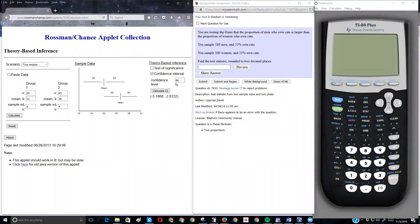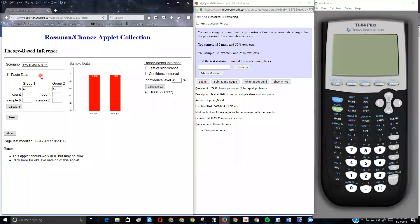We want to test the claim that the proportion of men who own cats is larger than the proportion of women who own cats, and we're asked to find the test statistic. I'm doing tests with proportions, not means, and I've got two of them. On the Rossman Chansa applet, I want to go to two proportions, and then I've got a little bit of work to do here.